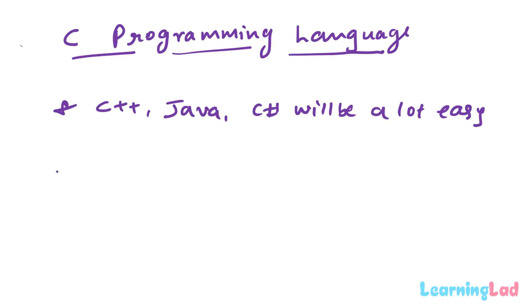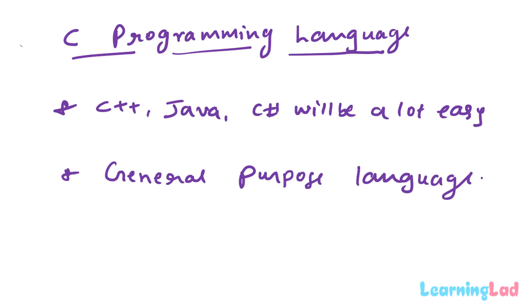C is a general purpose programming language, meaning you can use it to create different types of programs and software. For example, you can use C to write device drivers, create word processors, develop games, and build major parts of operating systems. C is also widely used in embedded devices where resources are limited and efficient programs are needed. For instance, the Curiosity rover sent to Mars by NASA has most of its code written in C.